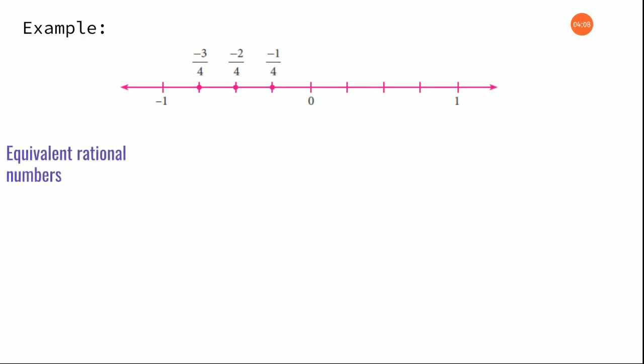Next: equivalent rational number. What is an equivalent rational number? It means you are going to find another equal value for that particular number. For example, if minus 4 by 7 is given and an equivalent rational number is asked, it should be multiplied and divided by any number — but it should be the same in the numerator and denominator. For example, multiplying and dividing by 5 gives the answer minus 20 by 35. So minus 20 by 35 is equivalent to minus 4 by 7. Equivalent rational number means multiply and divide by the same number.